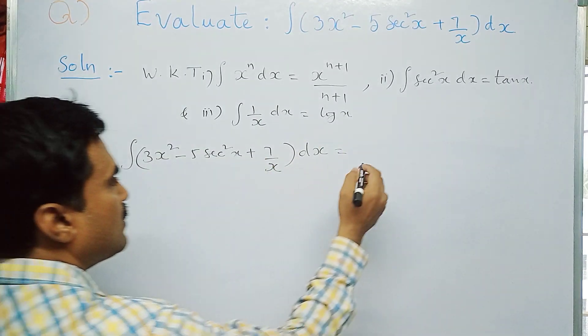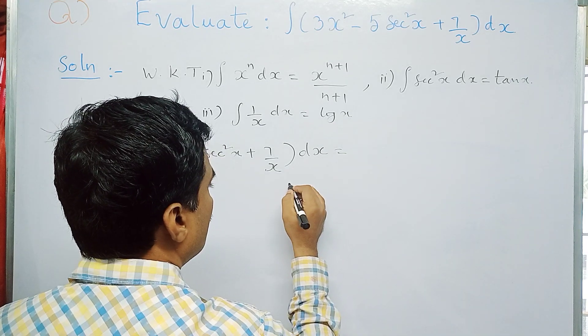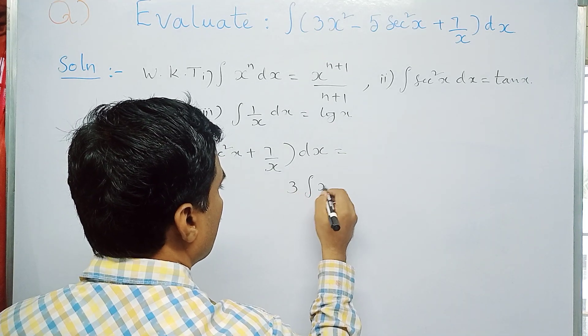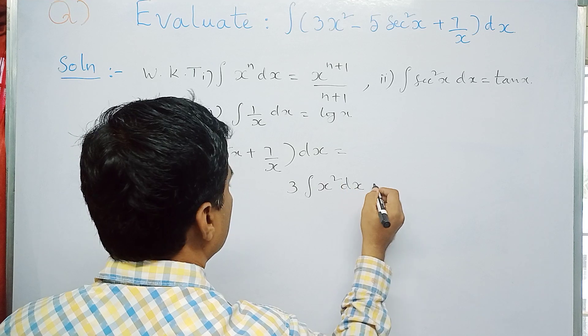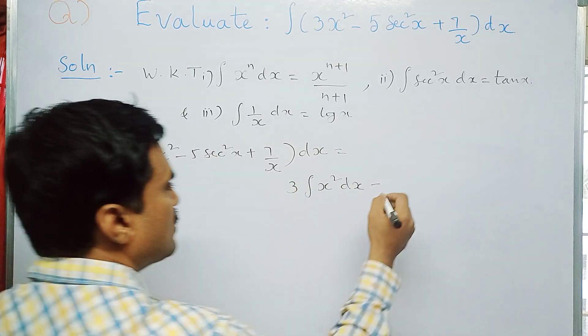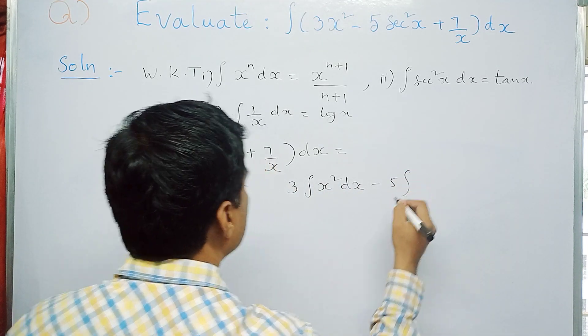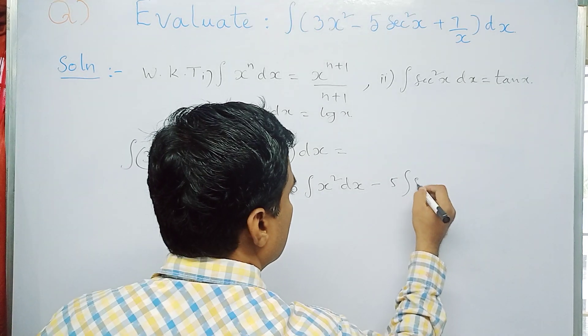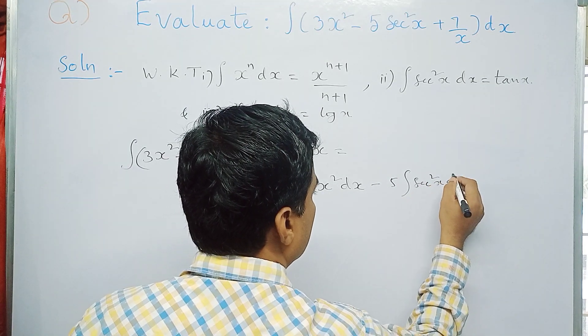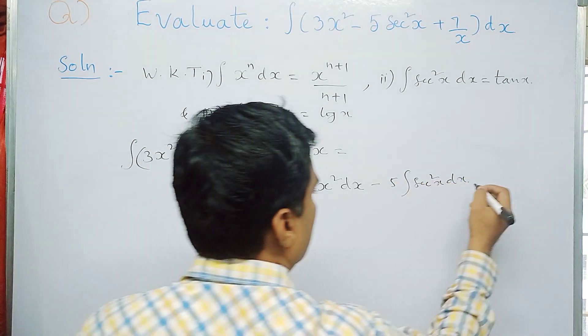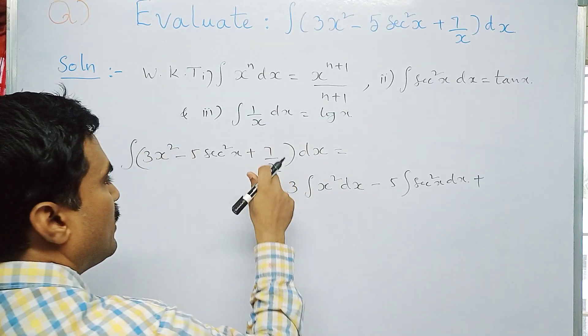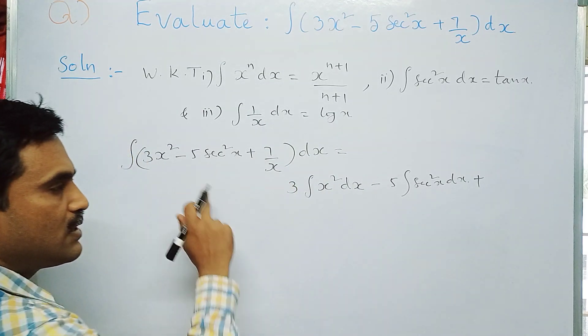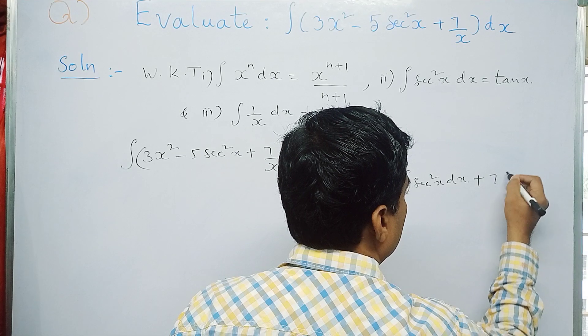So you can write this as: 3 into integral x² dx minus—now 5 is a constant, the second term—you can take out of this integral, integral sec²x dx. Next symbol is plus. And in this 7 by x, seven is a constant, so you can take out of this integral, so integral 1 by x dx.